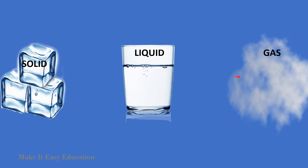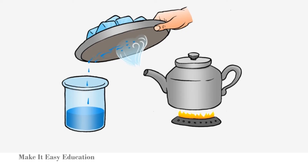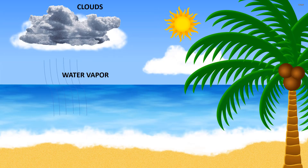The process of gas changing to liquid is called condensation. For example, water vapor when it loses heat or becomes cool, it turns to liquid. Water vapor from the hot sea or river, when it reaches the sky, cools to form clouds.